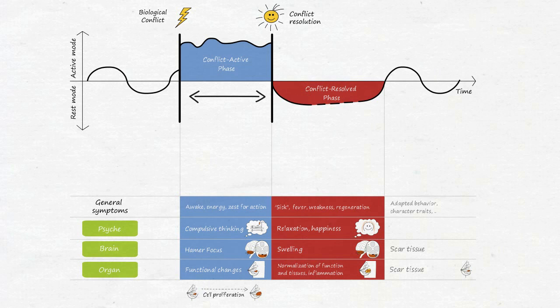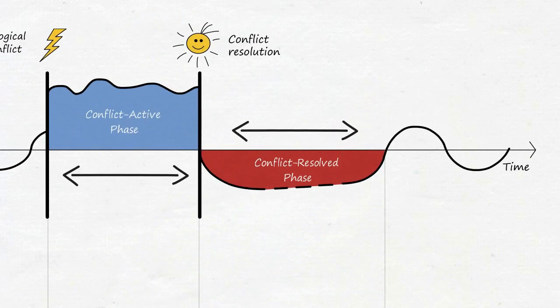The duration and intensity of the conflict-active phase roughly corresponds to the duration and intensity of the conflict-resolved phase and determines the extent of the expected symptoms, which makes it possible to estimate symptom progressions.